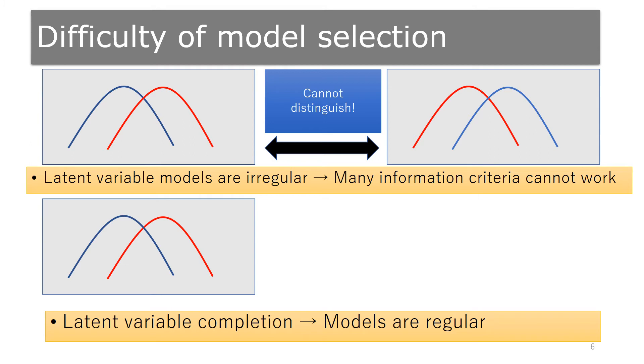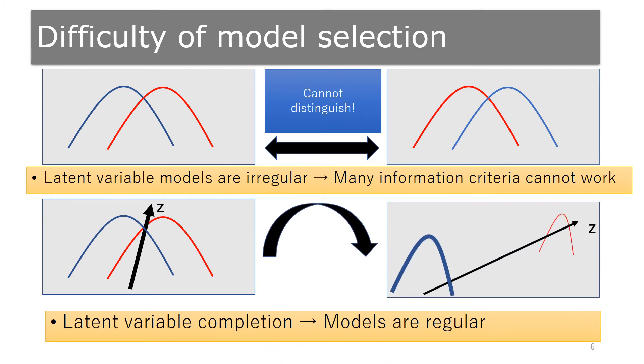The model selection is not easy for latent variable models, because the parameters are not identifiable when latent variables are marginalized out. The technique called latent variable completion helps us resolve this problem.